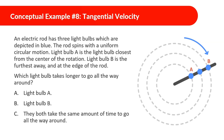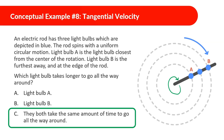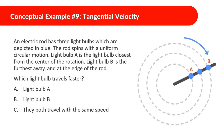An electric rod has three light bulbs depicted in blue. The rod spins with uniform circular motion. Light bulb A is the closest to the center of rotation; light bulb B is the furthest away at the edge of the rod. Which light bulb takes longer to go all the way around? They both take the same amount of time. Since it's a rod and they're all connected, they move with the same angular motion and complete one revolution together.